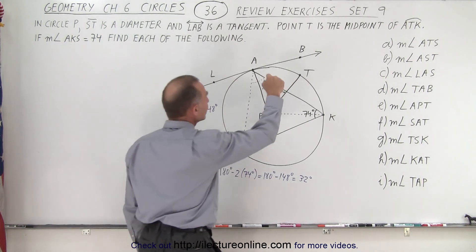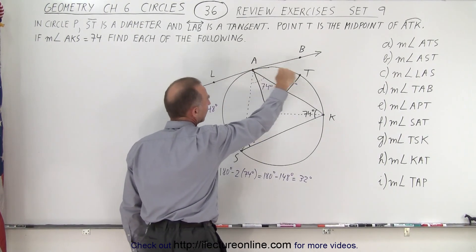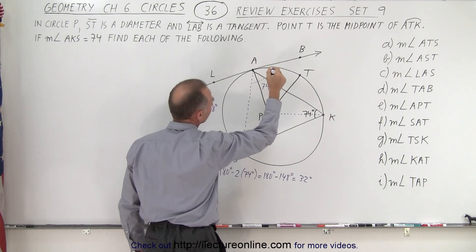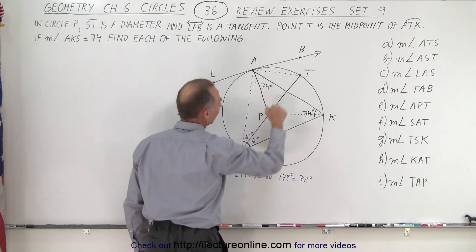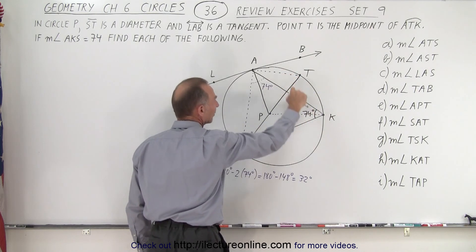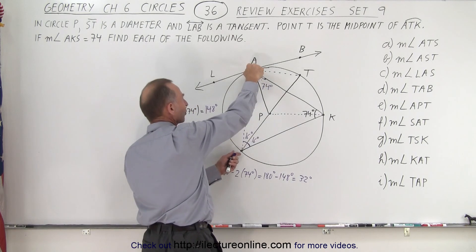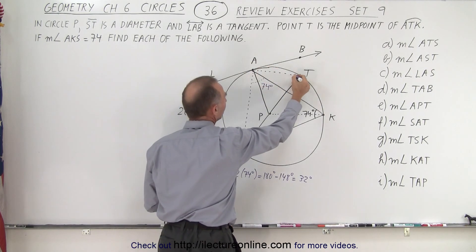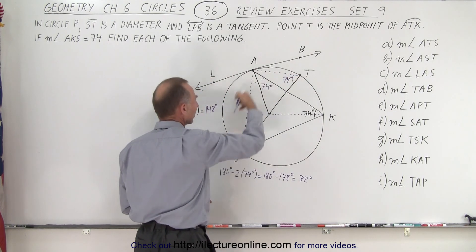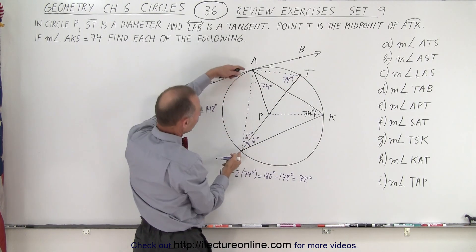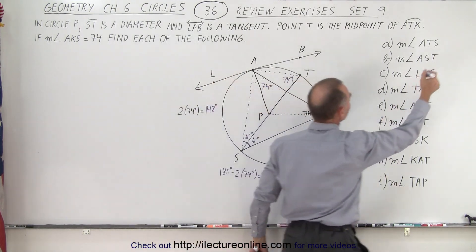Now we need to find angle ATS — from A to T to S. This angle subtends the same arc length at its two endpoints as angle AKS does, which means angle ATS must also equal 74 degrees, because both inscribed angles intercept the same arc.